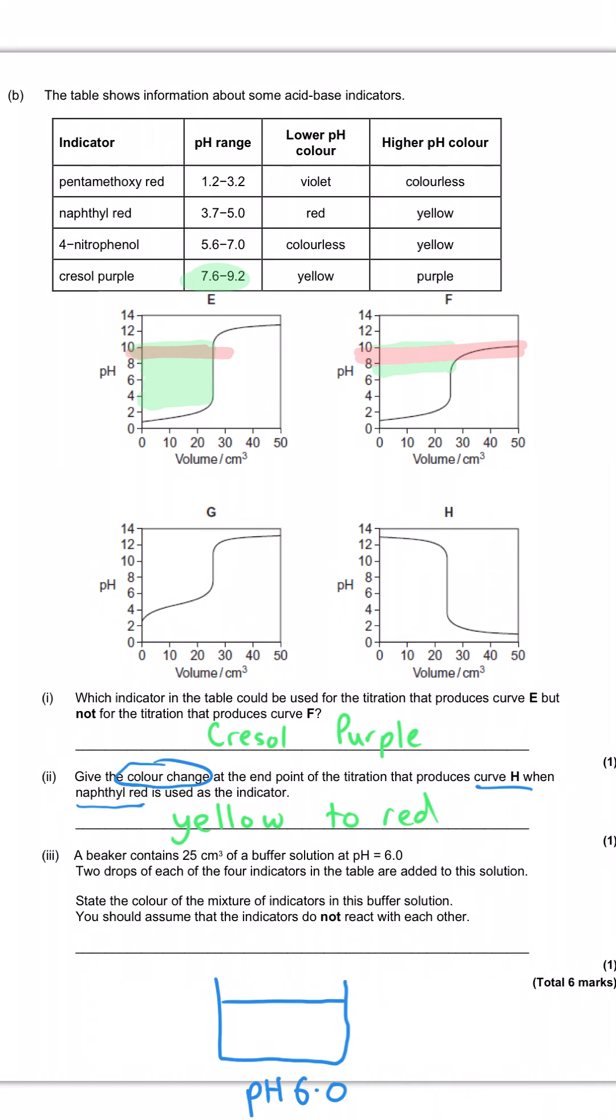And then the final part of this question says that we've got a beaker with 25 cm3 of a buffer with a pH 6. Two drops of each of the indicators are added to the solution. State the colour of the mixture in this buffer solution. Assume that there's no reaction taking place. So it is literally a mixture of the colours. And so systematically, the pentamethoxy red at pH 6 will be in the high pH colour. So that will be colourless. And then the napthyl red will be again its high pH colour. So that will be yellow.